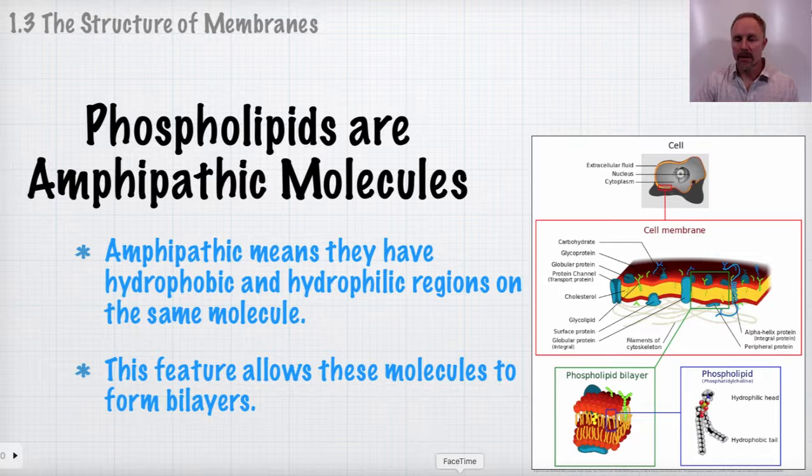So phospholipids are amphipathic molecules, and what that means is that they have both hydrophobic and hydrophilic regions on them and on the same molecule, and that's what allows them to behave the way they do and form the membranes that they do. And it also enables them to form bilayers, which is the way that the two molecules line up.